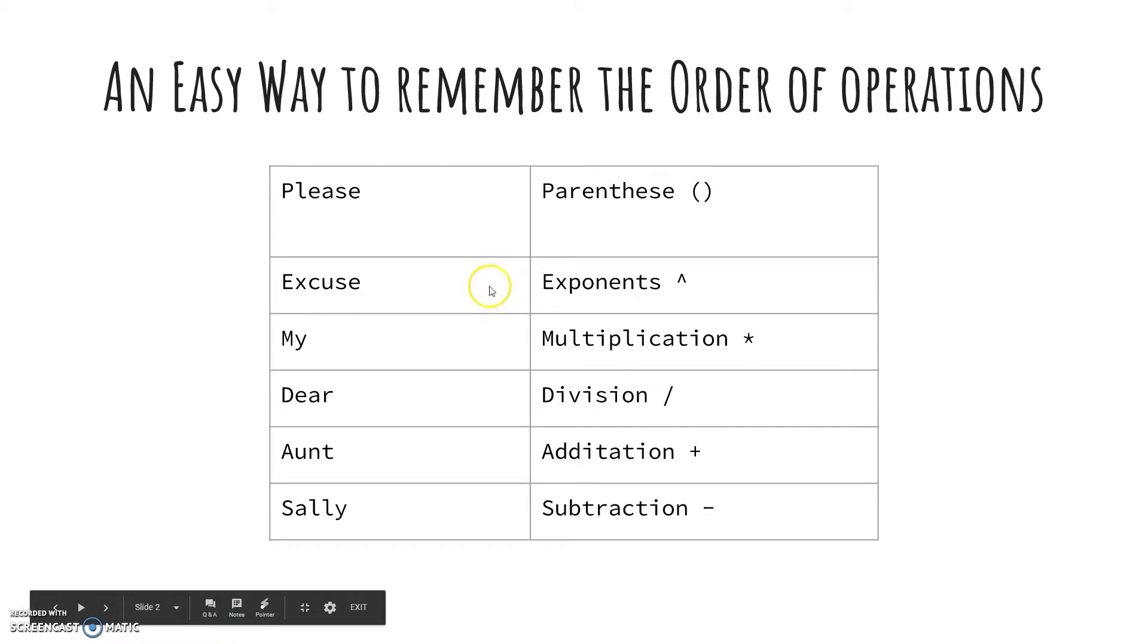for parenthesis, excuse for the exponents, my is for multiplication, dear is division, aunt is addition, and Sally is subtraction.